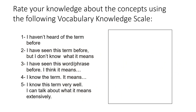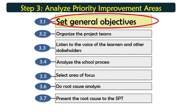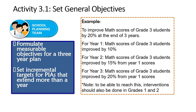Rate your knowledge about the concepts: objectives, SMART, incremental targets, clear and concise. These are the things you should consider when creating general objectives. You need to set general objectives for each PIA. Permeate measurable objectives for a three-year plan. Set incremental targets for PIAs that extend more than a year. For example, you can have: improved math scores of grade 3 students by 20% at the end of three years; math scores improve by 10% in year one; and improve by 15% from year one scores in year two.